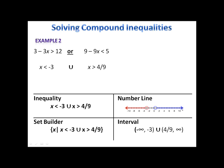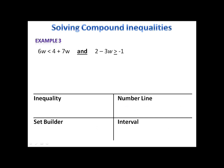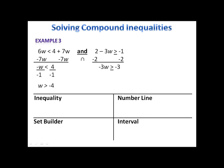In example 3, we see that we have two inequalities that are combined by the word AND. AND makes me think of an intersection. Just like before, I'll begin by solving each of the inequalities. I'll begin on the left side by subtracting 7w, and then I'll divide by negative 1, so I have w is greater than negative 4. Moving to the second inequality, I'll subtract 2 from each side and then divide by negative 3, and I'm left with w is less than or equal to 1. So our intersection is the numbers that are both greater than negative 4 and less than or equal to 1.